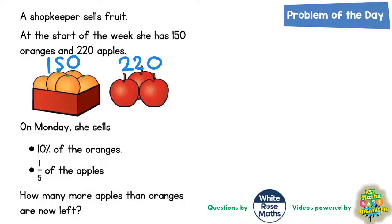On Monday she sells 10% of the oranges. So we need to figure out what 10% of 150 is. Well, to get 10%, 150 is the 100% because that's all of the oranges.